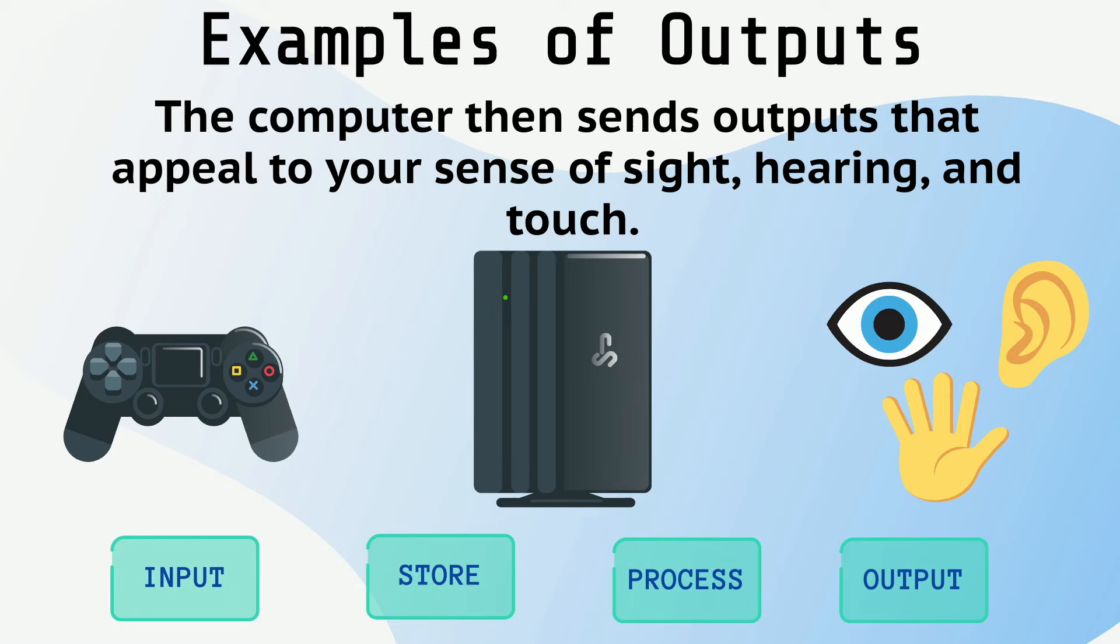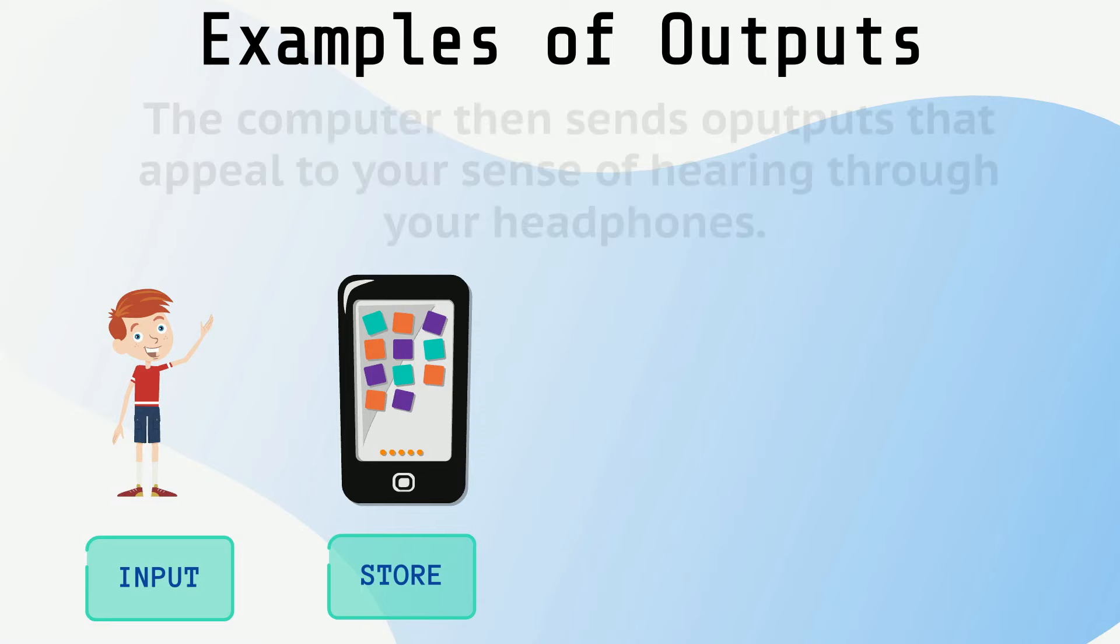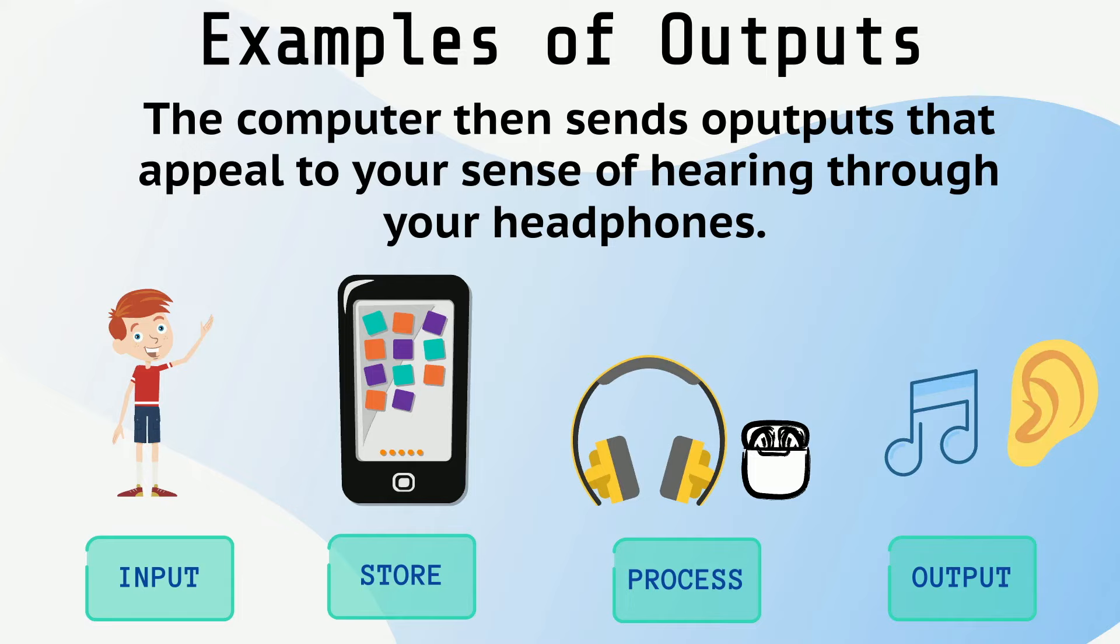Here is another example. When you are listening to music, you may use a touch screen to input information to the computer in your phone. The computer then sends outputs that appeal to your sense of hearing through your headphones.